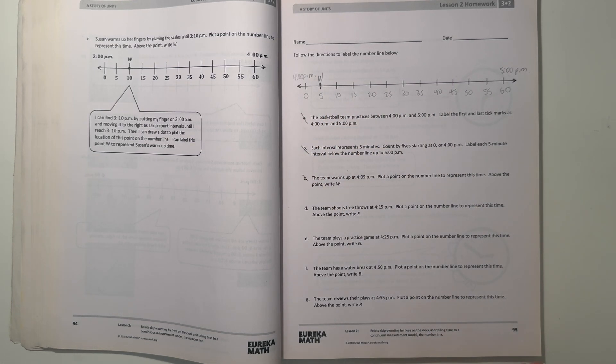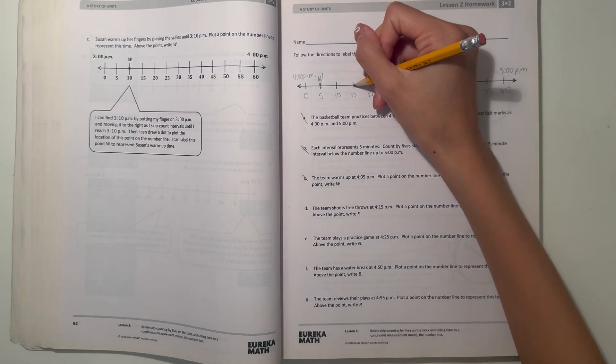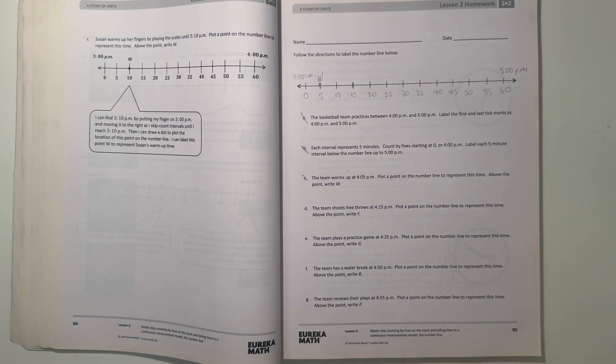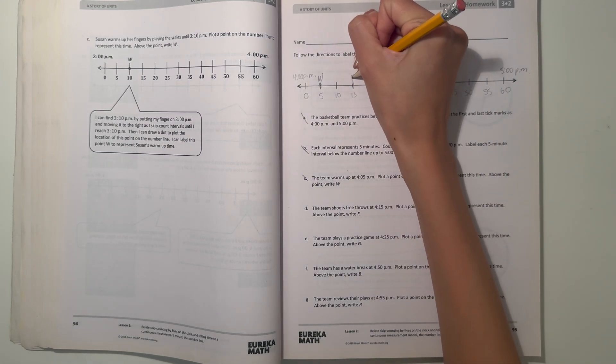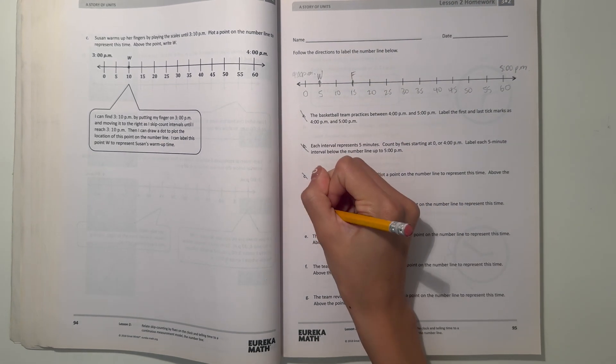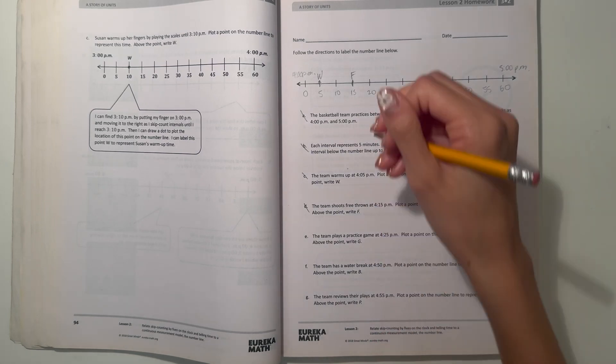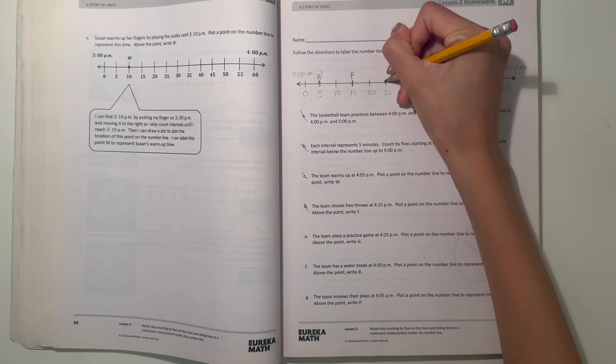Now part d says: the team shoots free throws at 4:15 p.m. Plot a dot on the number line and write F for free throw. And now part e: practice game at 4:25. Plot a point and write G for practice game.